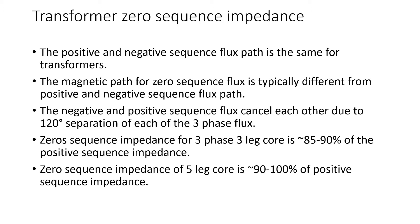Transformer zero sequence impedance is an important concept, especially in system protection. The positive and negative sequence flux path is the same for transformers. The magnetic path for zero sequence flux is typically different from positive and negative sequence flux path. This is an important point. The negative and positive sequence flux cancel each other due to the 120 degree separation of each of the three phase flux.